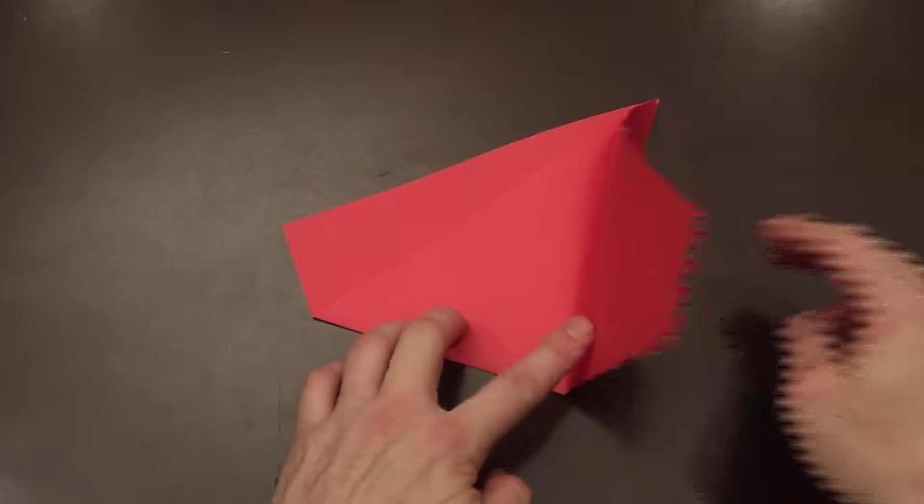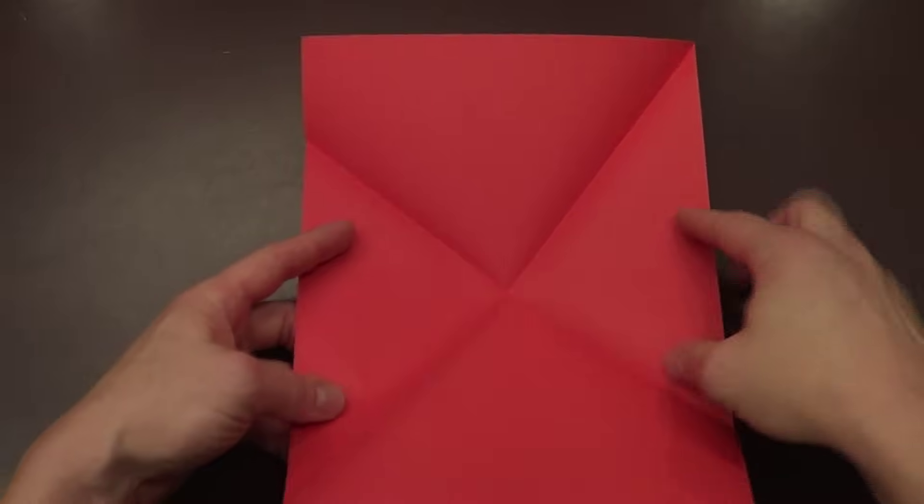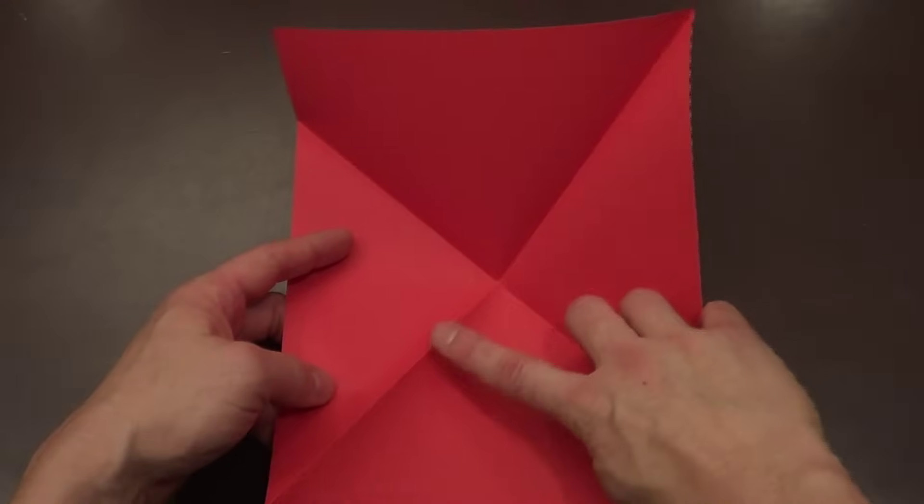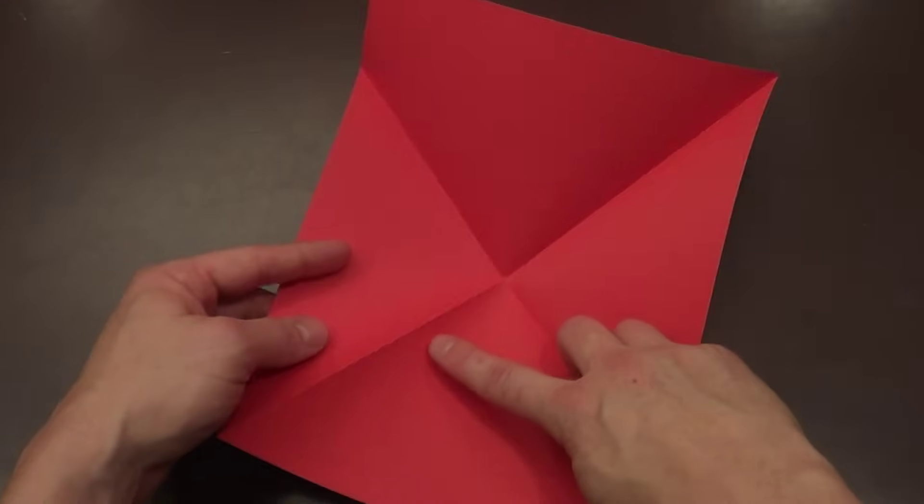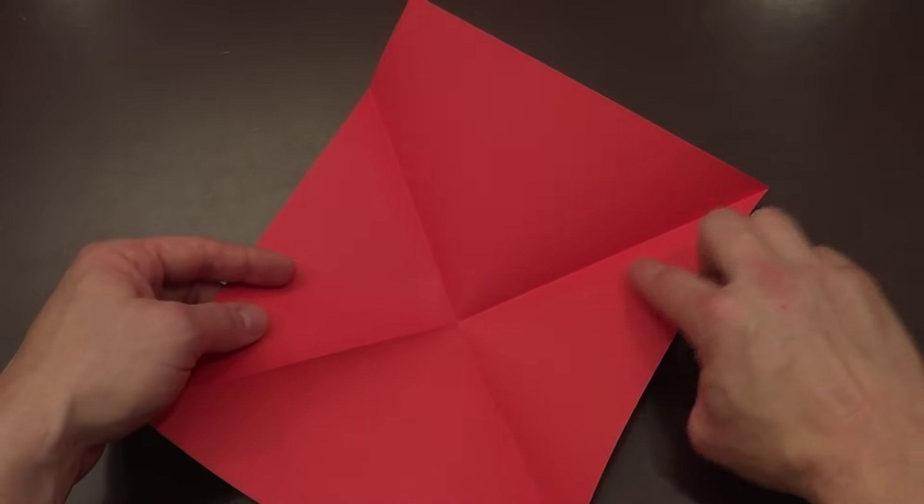Now we are going to open this up all the way and what you are going to notice is we are going to have three valley folds and one mountain fold. So we need to get rid of this mountain fold, we are going to do a reverse fold, but we are going to do it the easy way.